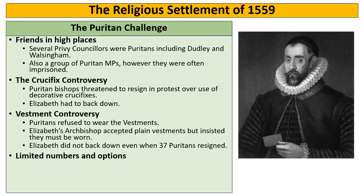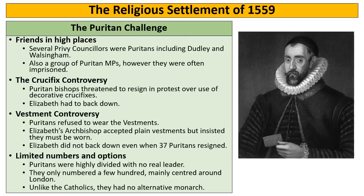Perhaps most importantly, the reason why the Puritan challenge was never that strong was because they were very divided — there were several different groups with no real leader, only a few hundred of them mainly in London amongst the gentry and upper classes. And unlike Catholics who had Mary Queen of Scots as an alternative monarch, Puritans couldn't get rid of Elizabeth, because if they did, the next Queen of England would be Mary — a Catholic — who would be even worse to them. Their protest could only ever go so far.